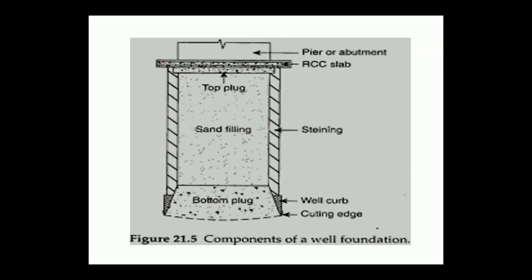This figure shows the main components of a well foundation. Starting from the top, you can see an RCC slab which is the well cap. Below that there is a top plug which consists of concrete. The sides of the well foundation are covered with a well steining, which is a wall made up of RCC or masonry. The space between the well steining is filled with sand. You can see a well curb and a cutting edge below the well steining. The bottom edge is also covered with concrete.